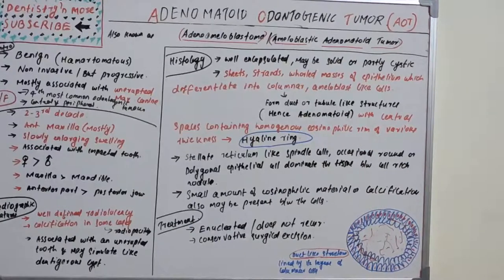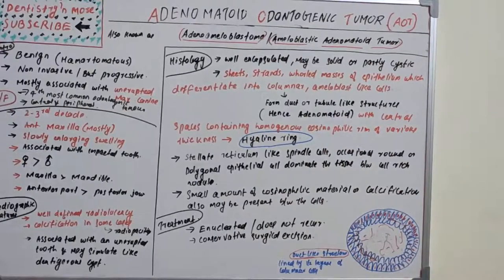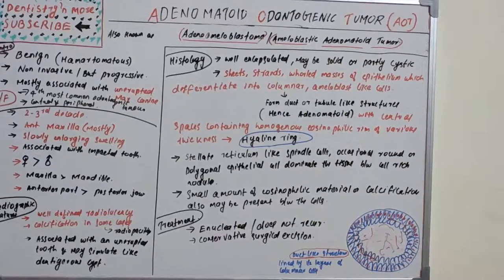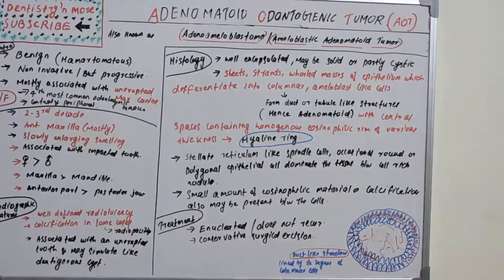The central intraosseous type has follicular and extra-follicular subtypes. The follicular type is associated with an impacted tooth and is the one commonly confused with a dentigerous cyst. Sometimes cases with both AOT and dentigerous cyst are found in the same location.